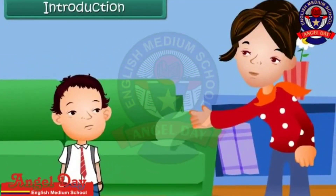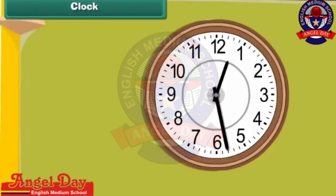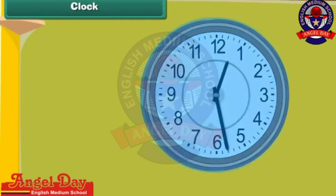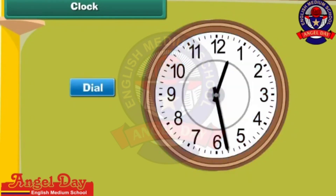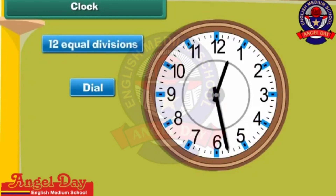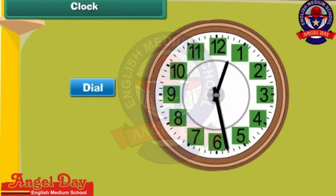In this lesson, you will learn about time. Look at this clock. The visible side of the clock is known as its face. It has a dial. The dial has 12 equal divisions, and these divisions are numbered from 1 to 12.